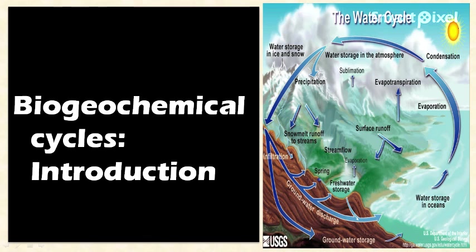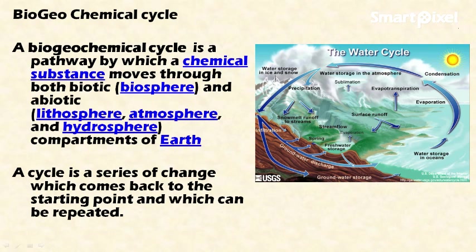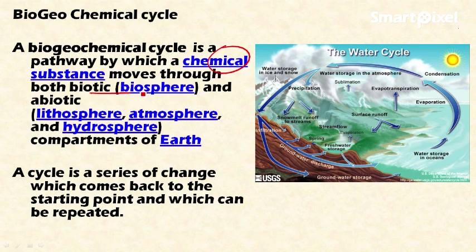In this video let's discuss biogeochemical cycles. A biogeochemical cycle is a pathway by which chemical substances move through both biotic and abiotic components of the earth. It follows a particular path where nutrients move through these components.